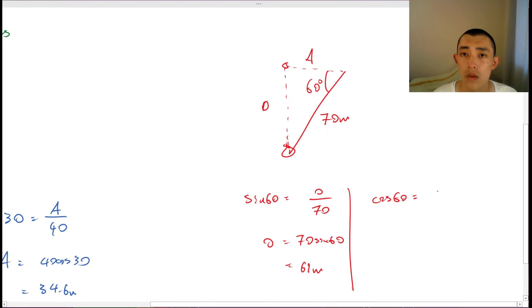Cosine 60 is equal to adjacent over hypotenuse. Adjacent is equal to 70 cos 60, which would be equal to 35. So we can put that here. 35 meters. 61 meters. And now we're ready for the second step.